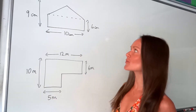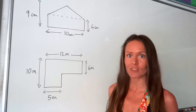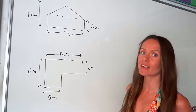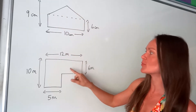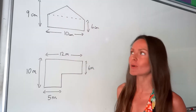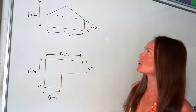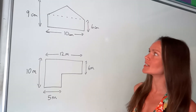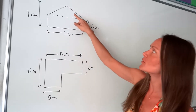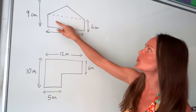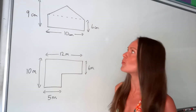Hey guys, so in this video I'm going to show you how to calculate the area of compound shapes. Remember, area is just the space inside the shape. And a compound shape — well, they look like difficult shapes, but we can actually split them up into easier looking shapes like I've done here. So we've got a triangle plus a rectangle. That's an example of a compound shape.